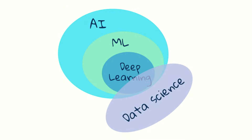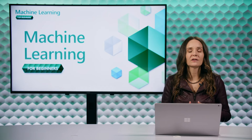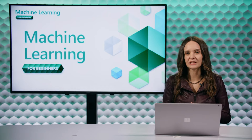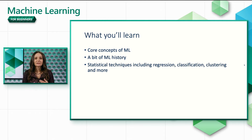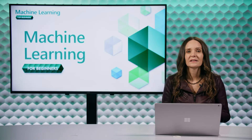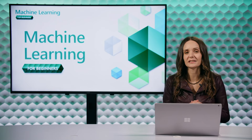You've also probably heard of deep learning, which is a subset of machine learning that relies on neural networks to learn from data. In this course, we're going to cover what we call classical machine learning. You'll learn some core concepts of ML, a bit of history, statistical techniques like regression, classification, clustering, and more. The concepts you learn here will serve you well as you progress to more advanced techniques.